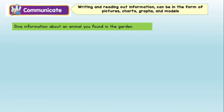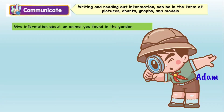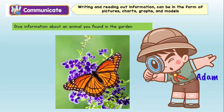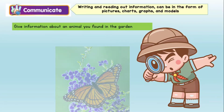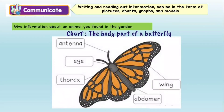Let's try this exercise. Teacher assigned Adam to give information about an animal he found in the garden. Adam saw a beautiful butterfly. He observed it carefully, then he sketched the butterfly, and labeled the body parts. Setelah memerhati rama-rama dengan teliti, Adam melakar rama-rama, kemudian dia melabel anggota badan rama-rama. Adam can also use a chart to present and give more information about the butterfly he found in the garden. Adam juga boleh menggunakan carta ini untuk menyampaikan maklumat tentang rama-rama ini.